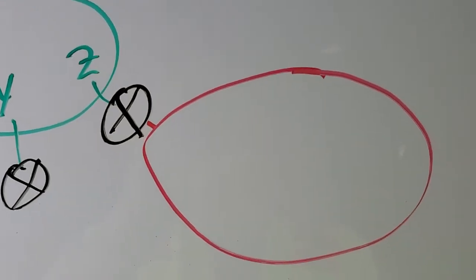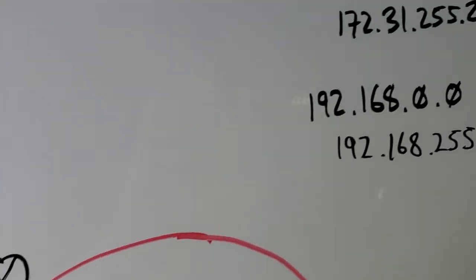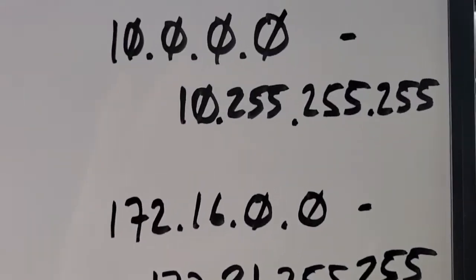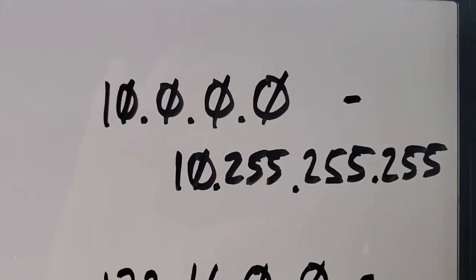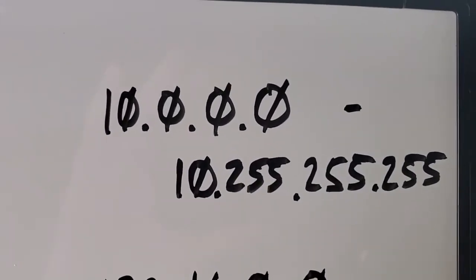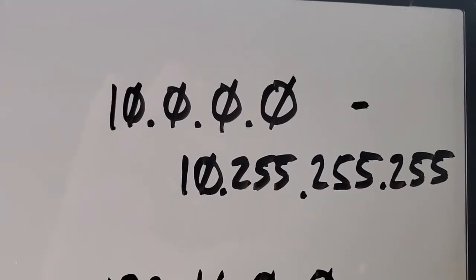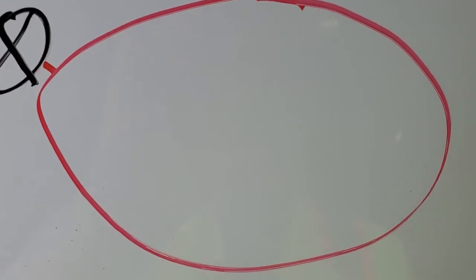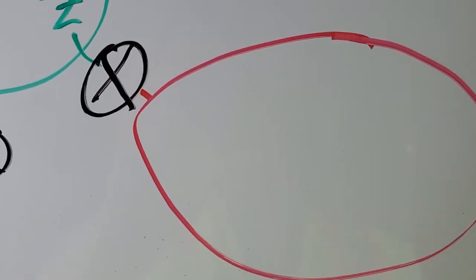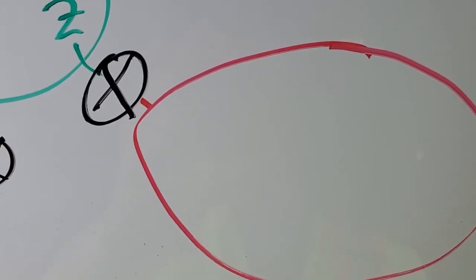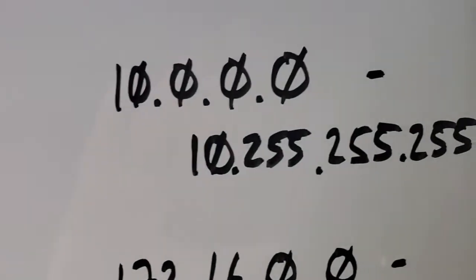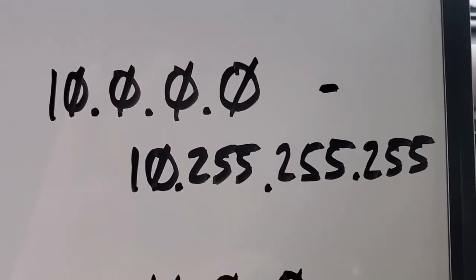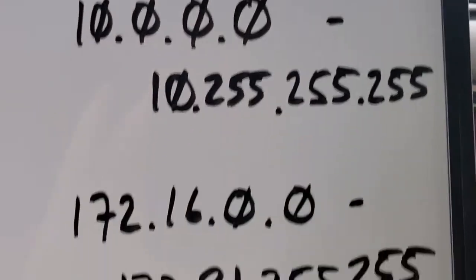The IP addresses that are available to a router — anything that starts with a 10 is a private IP address. Those are not usable on the internet; they're only used on private networks. As soon as your router sees an IP address that starts with a 10, it will not send it up to the internet. It's designed that way — that's how it works.